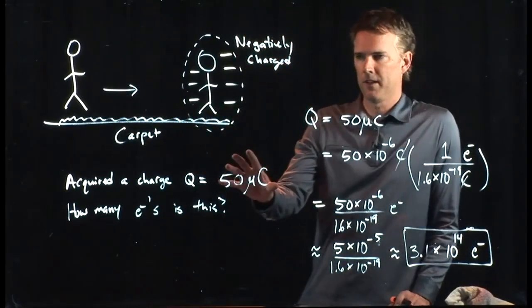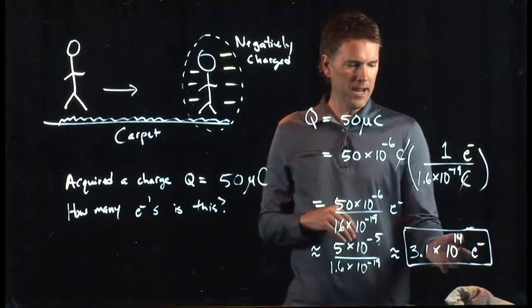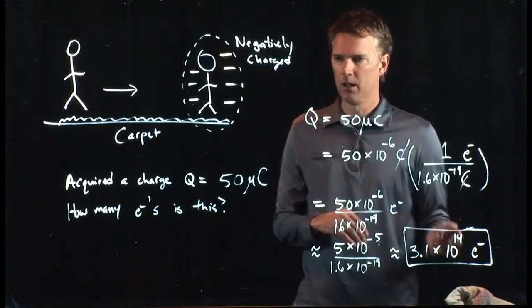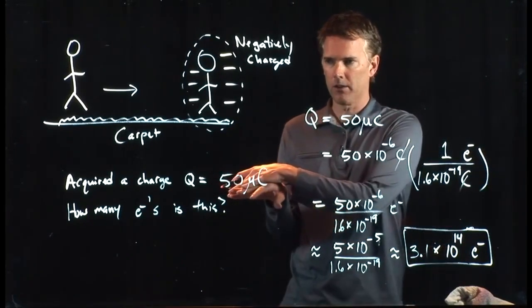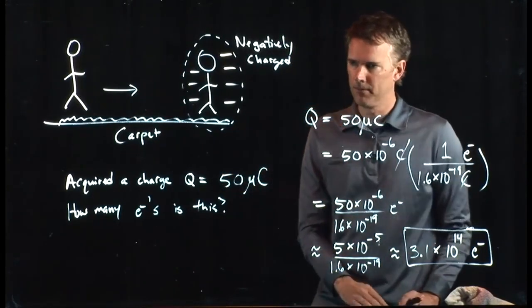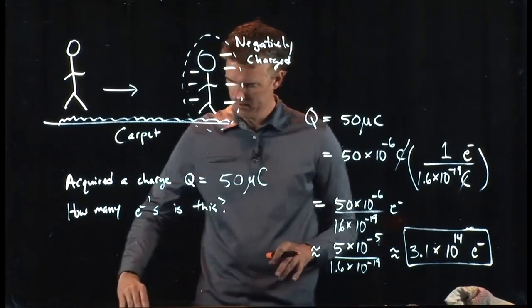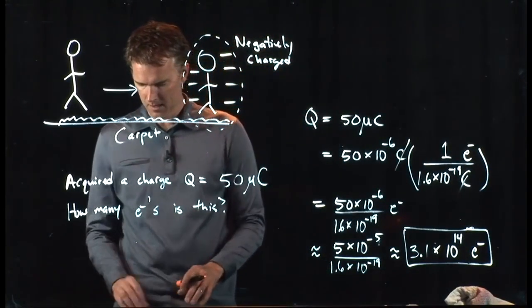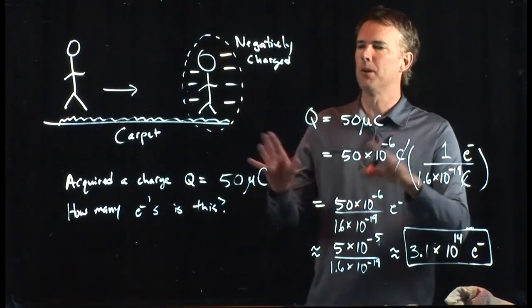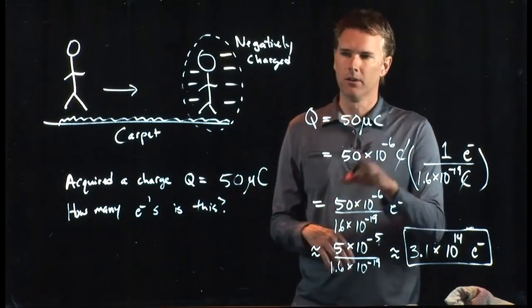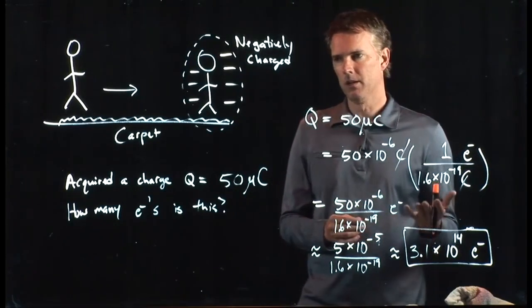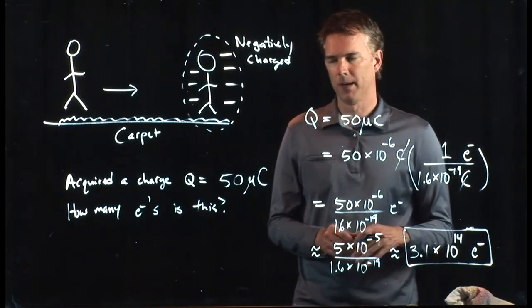And these, we said, were probably realistic numbers. So that's sort of amazing, right? This is 310 trillion electrons that you pick up just walking across the carpet. So there's little fibers with tons of those electrons just ready to jump off and land on you. Any questions about that one? There's a second part to it, which is how much mass does that correspond to? And you can do that conversion yourself. All you need to know is the mass of the electron, which we know is 9.1 times 10 to the minus 31 kilograms.